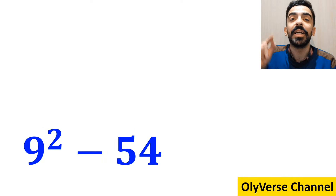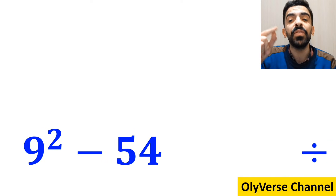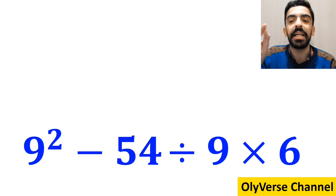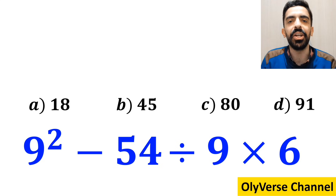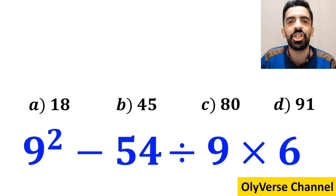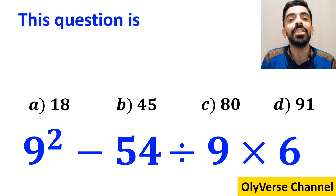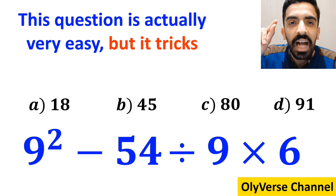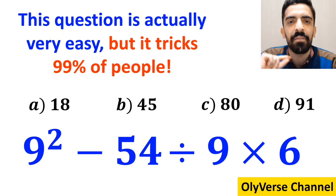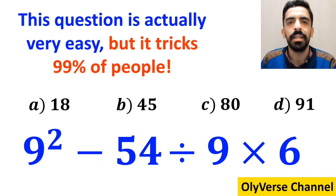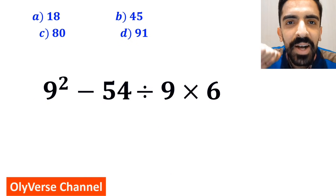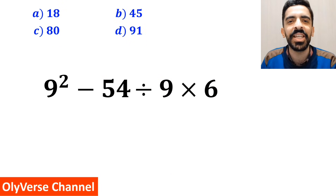What is the value of the expression 9 squared minus 54 divided by 9 times 6? Which option do you think is the correct answer to this question? This expression is actually very easy but it tricks 99% of people. Let's break it down and solve it together.